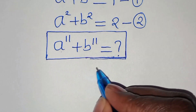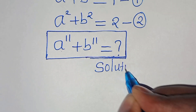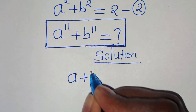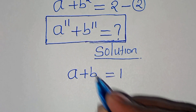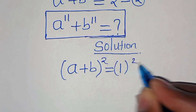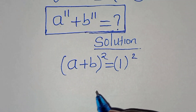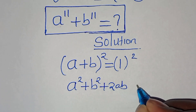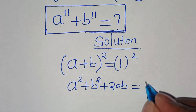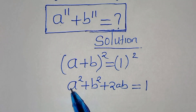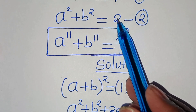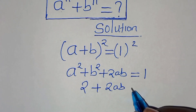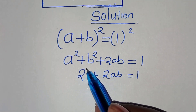From equation one, which is a plus b equal to one, let's square both sides. If we expand this we have a squared plus b squared plus two times ab, and this is equal to one squared which is one. We have that a squared plus b squared appears in equation two which is equal to two, so let's substitute two here: plus two times ab equals one. Let's take two to the right hand side.